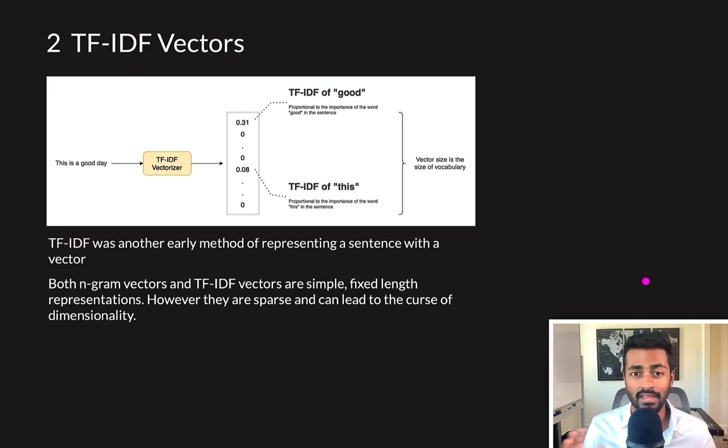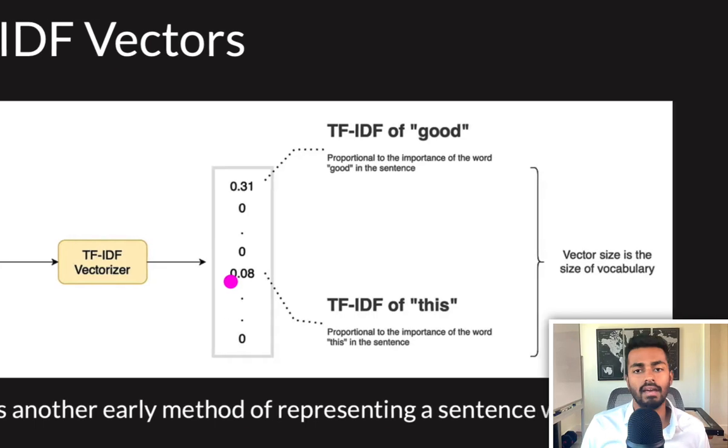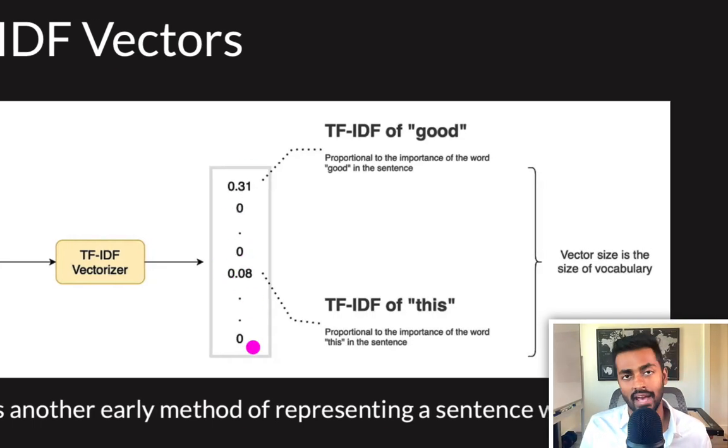Another very early method of representing sentences was the TF-IDF vectors. So TF stands for text frequency, IDF stands for inverse document frequency. Now, when converting a sentence into a TF-IDF vector, we determine the TF-IDF of every single word in the vocabulary with respect to the sentence, and then populate it in the form of a vector. For example, this here would be the TF-IDF score of the word 'good'. This here kind of might be the TF-IDF score of the word 'this'. And the size of this vector would be equivalent to the vocabulary size.